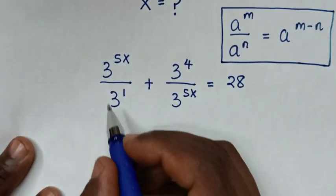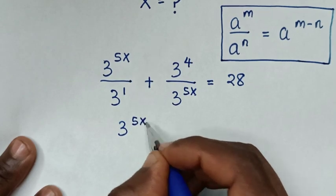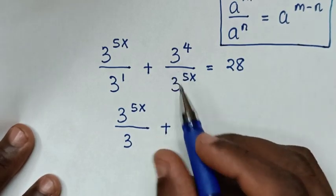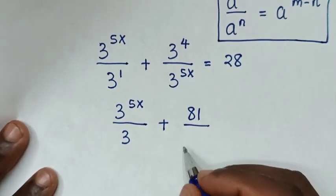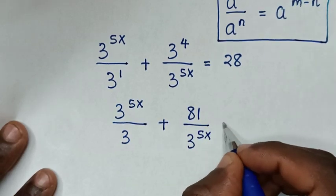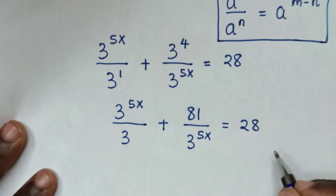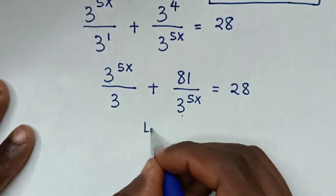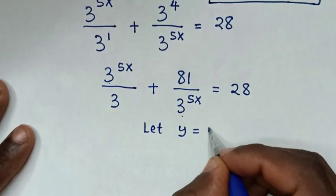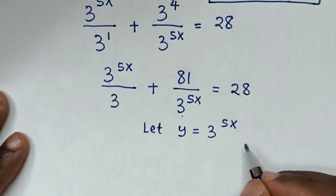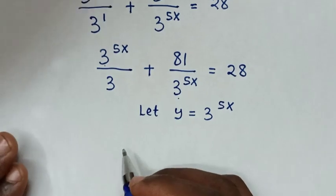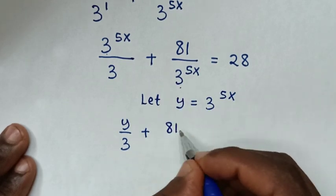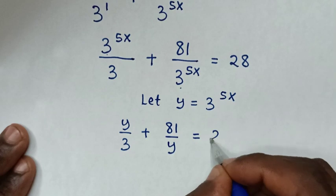In the next step, 3 power 5x over 3 power 1 simplifies with denominator 3, and 3 power 4 is 81 over 3 power 5x, equal to 28. Since 3 power 5x is common, we let y equal to 3 power 5x. Then the equation becomes y over 3 plus 81 over y is equal to 28.